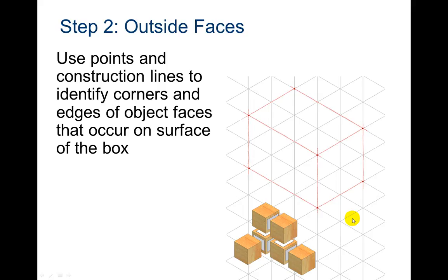Now you're going to use points and construction lines to identify corners and edges of object faces that occur on the surface of the box. So notice this area here was two, so we have one, two. This one here is just one, so they've drawn a little box here. And then this one's one, so they've drawn a box here.